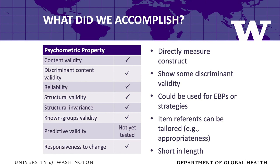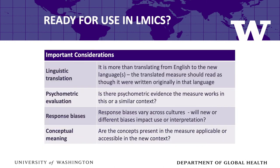Some important features of these three measures are worth noting. First, they directly measure the construct of interest, not proxies like upstream determinants. Second, they show discriminant content validity—our measure of acceptability measures acceptability only and does not measure appropriateness or feasibility, with very little item overlap or conflict. Third, they can be used to assess the acceptability, appropriateness, and feasibility of evidence-based practices, implementation strategies, or both. Fourth, the items can be tailored somewhat without changing the measure's psychometric properties. Finally, they are each only four items long, making them practical for real-world settings. There is a real hunger for reliable, valid, pragmatic measures—the article was published in August 2017, has been viewed more than 20,000 times, cited more than 130 times, translated into 10 languages, and 61 scholars from 20 countries have informed us they plan to use our measures.